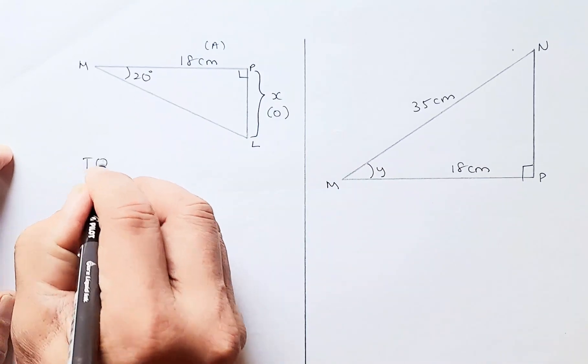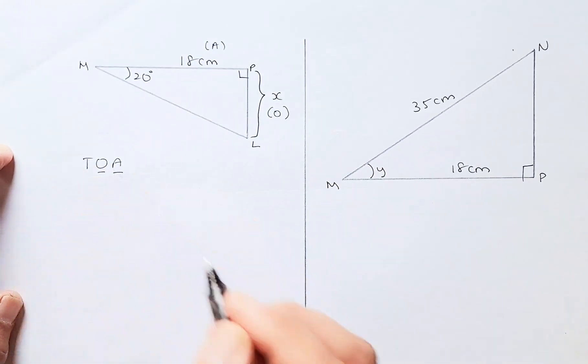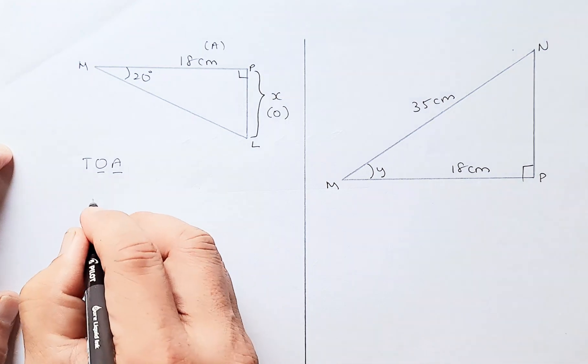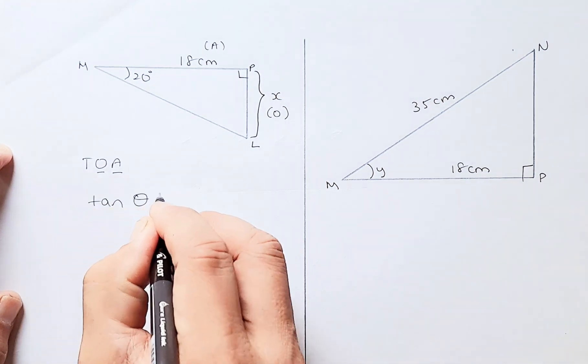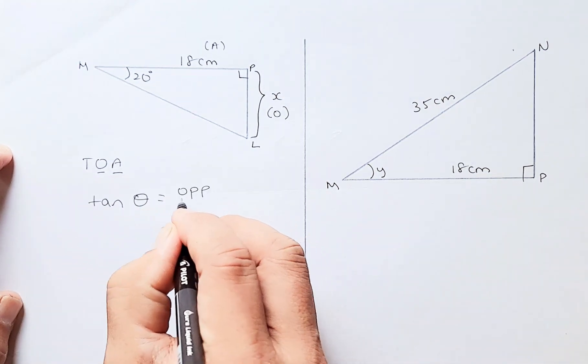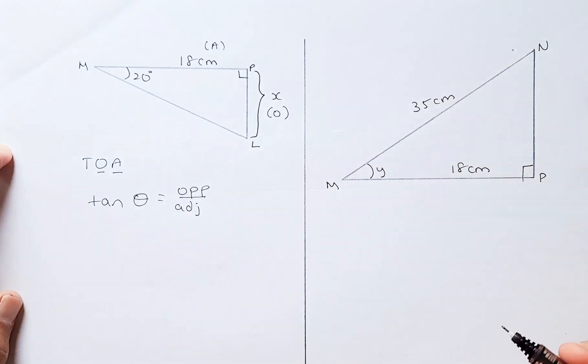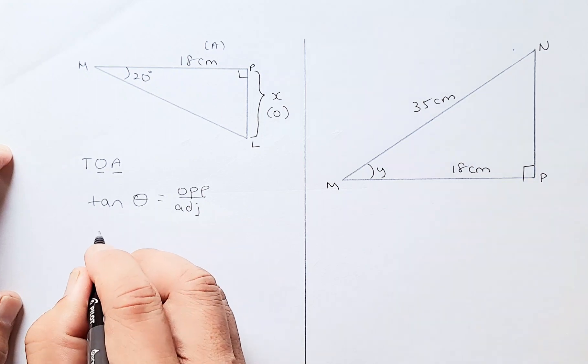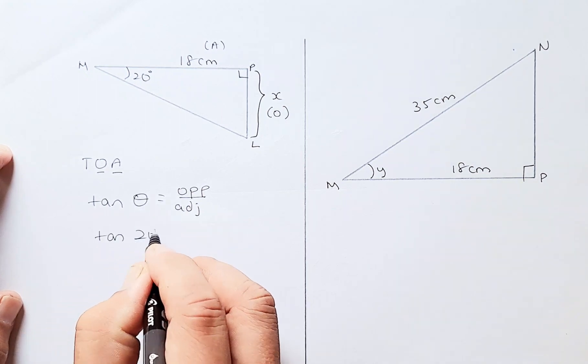TOA because you have O and A. TOA means tangent theta equals opposite over adjacent. That is TOA. So next, we're going to substitute the numbers. Theta is the angle, so it's going to be tangent 20 degrees.